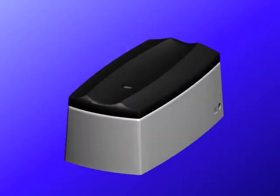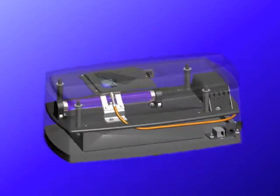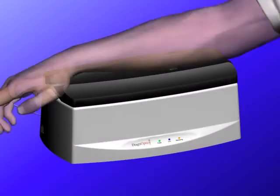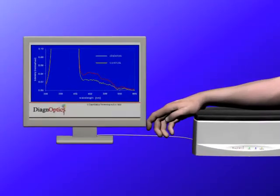The AGE reader is a proprietary medical device which can non-invasively assess the tissue accumulation of AGEs within 30 seconds. The result of its measurement enables an immediate risk prediction for cardiovascular risks in real time.